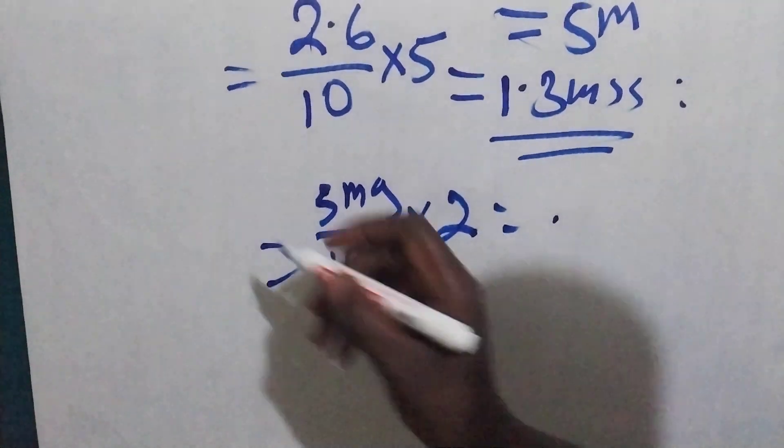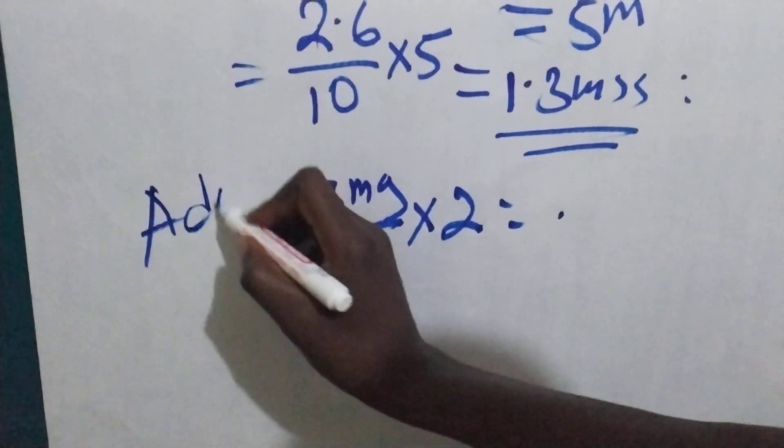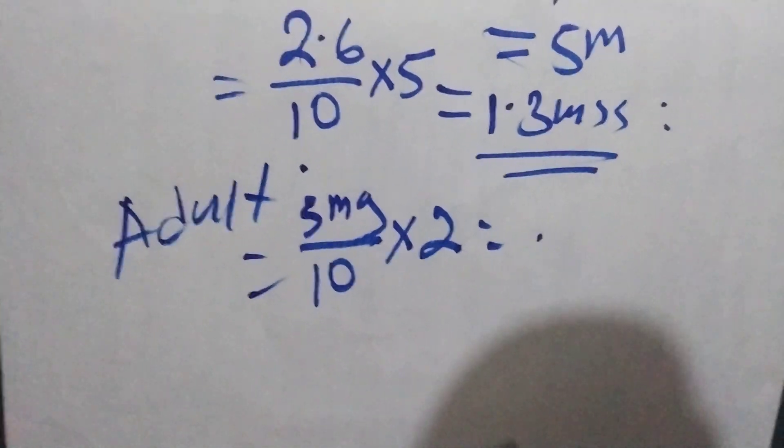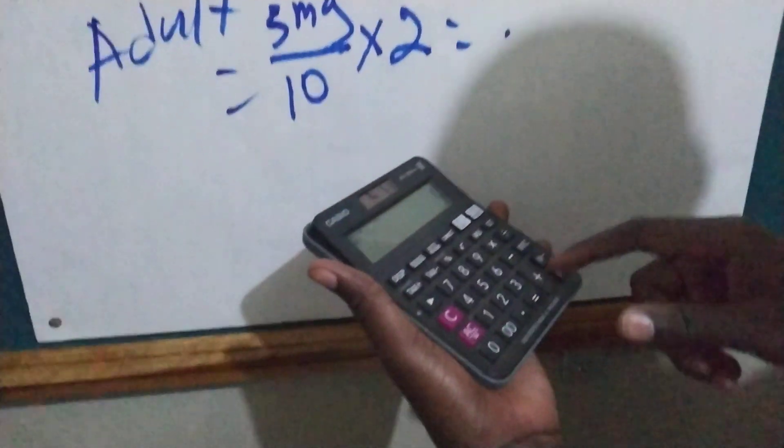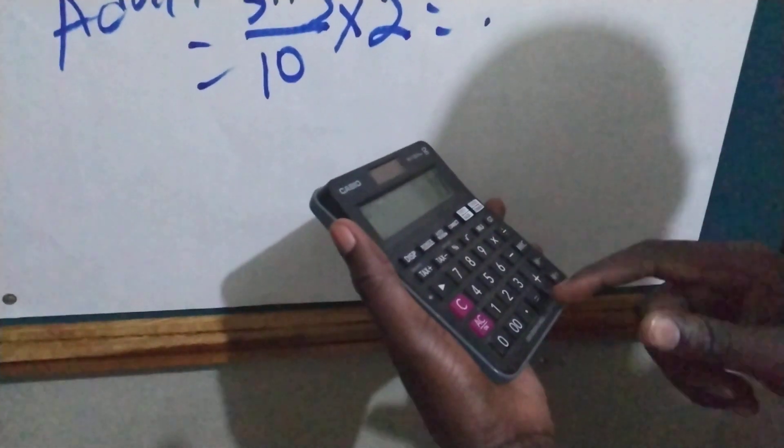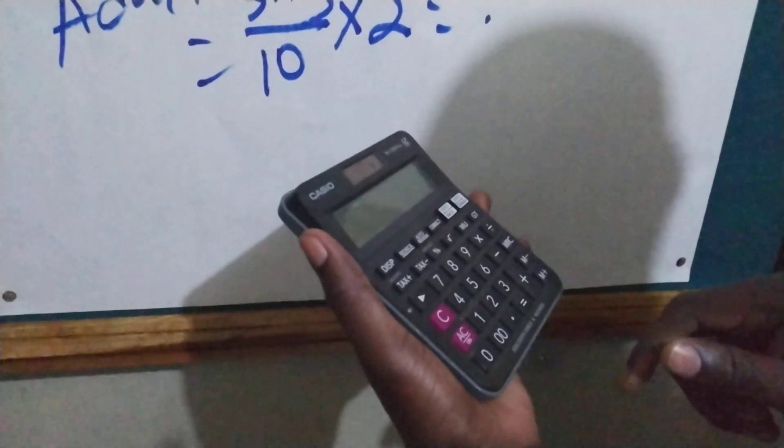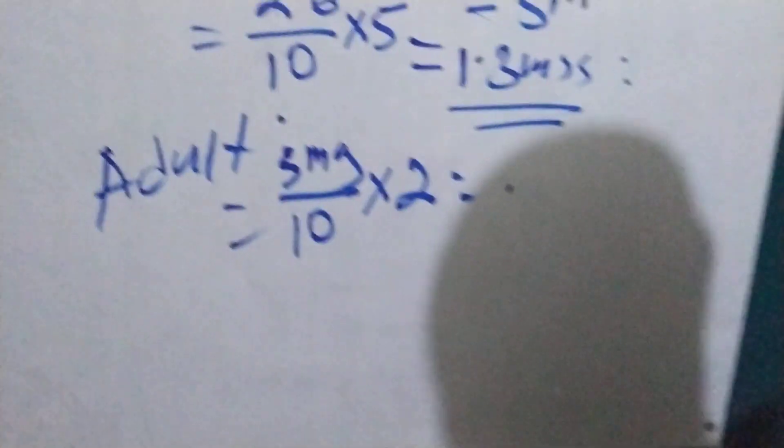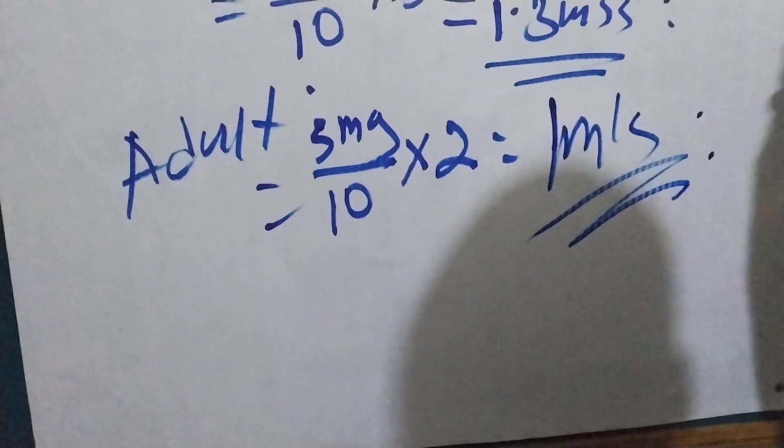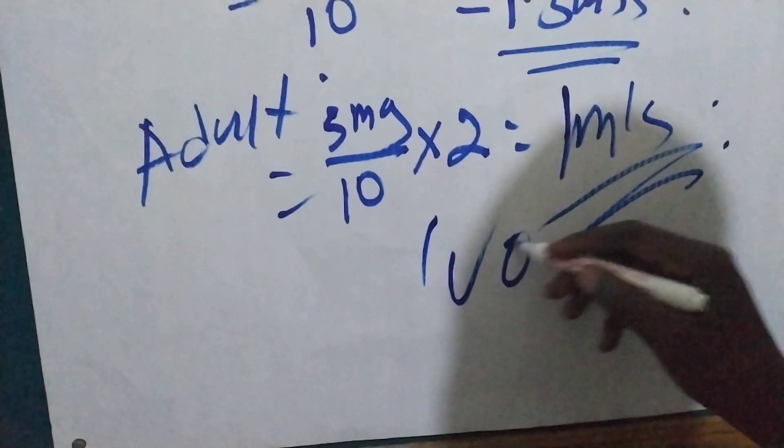This one is for adults. So this is 5 milligrams divided by 10 times 2. So we are going to aspirate 1 mil and we give to the patient, either IV or IM.